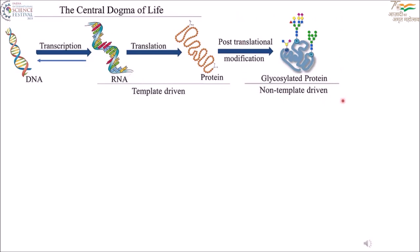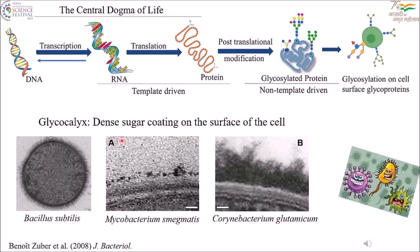Looking at a cell, this is how it will look when it is covered with a dense layer of glycans or sugars. This layer of sugar we call the glycocalyx, and all bacteria carry glycocalyx on their surface.